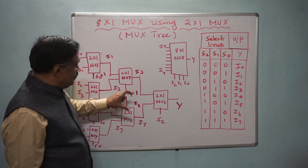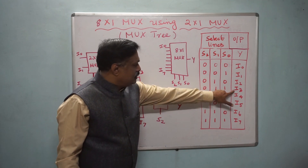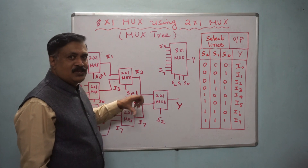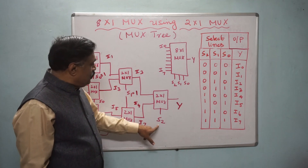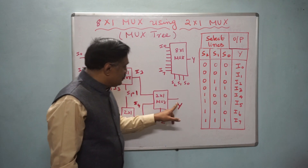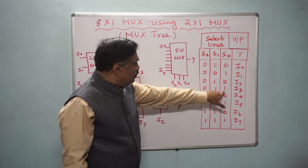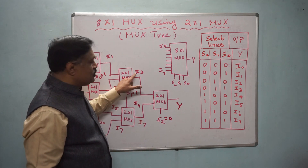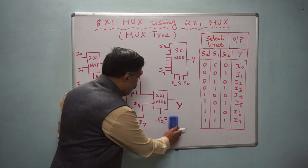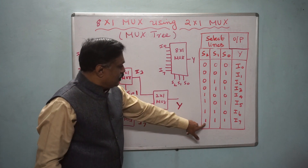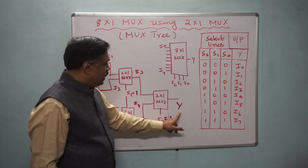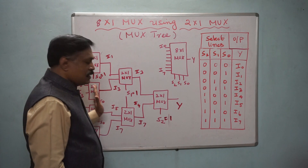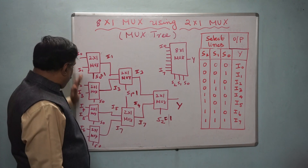So with S0=1, S1=1, S2=0, I3 is the output. With S0=1, S1=1, S2=1, I7 is the output. Depending on the select lines S0, S1, S2, we can select any of the 8 inputs as the output.